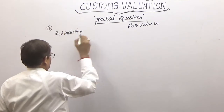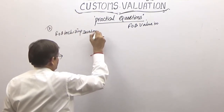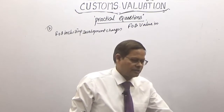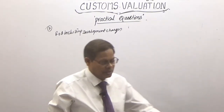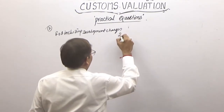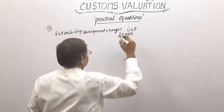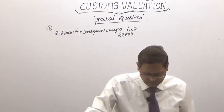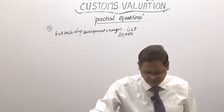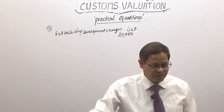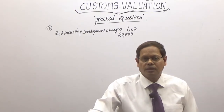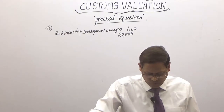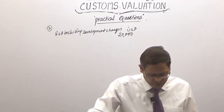Development charges are outside India, so they are a part of the value — it remains $20,000. The development charges were borne by the supplier, meaning they were incurred outside India, so we include them. Freight paid by air is $4,500.